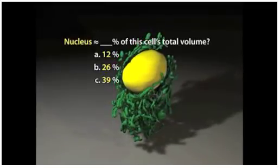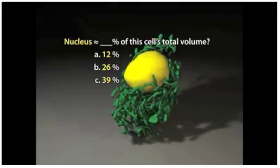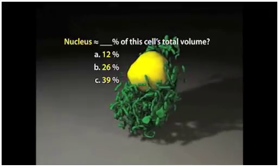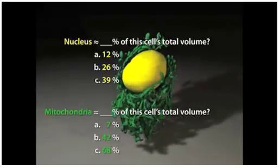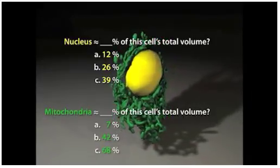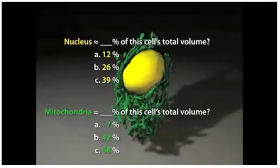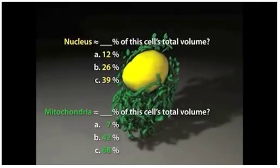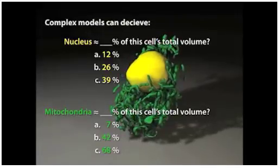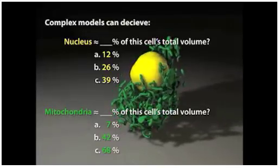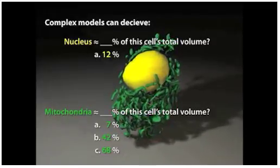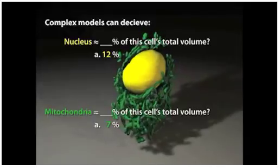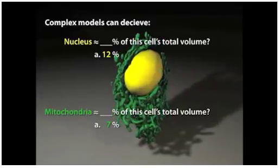For example, approximately how much of the cell's total volume do you think that this yellow nucleus occupies? About 12%, 26%, or about 39%? How much of the cell's total volume do you think that the green mitochondria occupy? About 7%, 42%, or about 68%? Believe it or not, the correct answers are closest to 12% for the nucleus, and only 7% for the mitochondria, much lower than most people infer by glancing directly at these representations of the data.